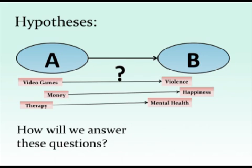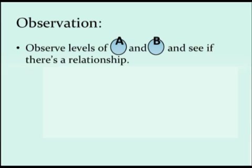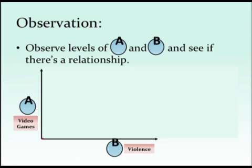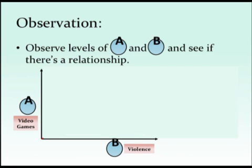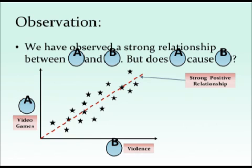So how do we answer these questions? How do we search for these relationships between variables? The most natural answer is that you could observe. Simply measure levels of A and levels of B, and see whether people who are high in A are also high in B — do people who play lots of violent video games also do lots of violent things? If we plot that graphically, you have A on one axis and B on the other, and we collect multiple data points to understand the relationship between A and B.